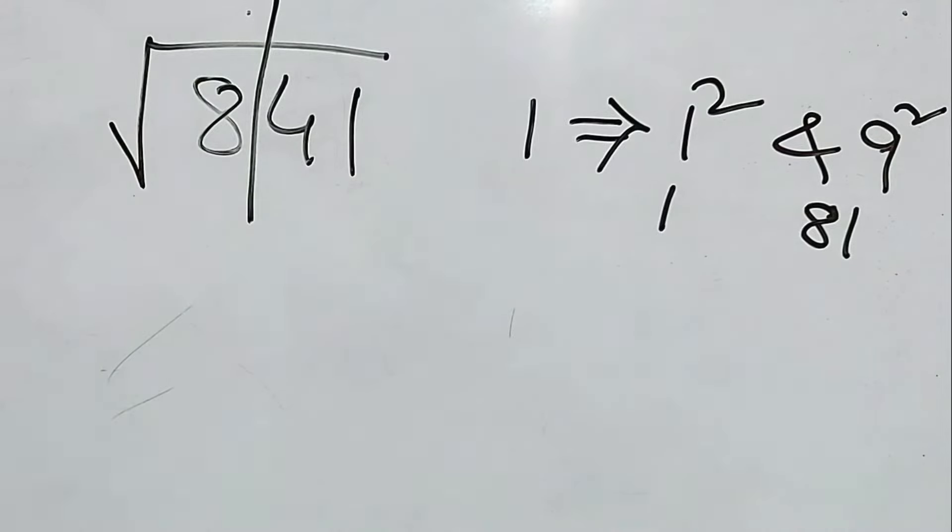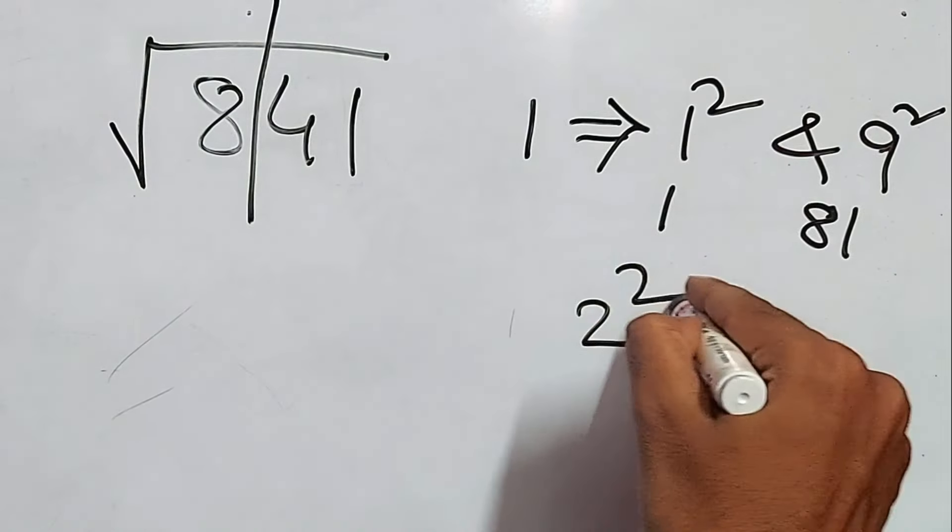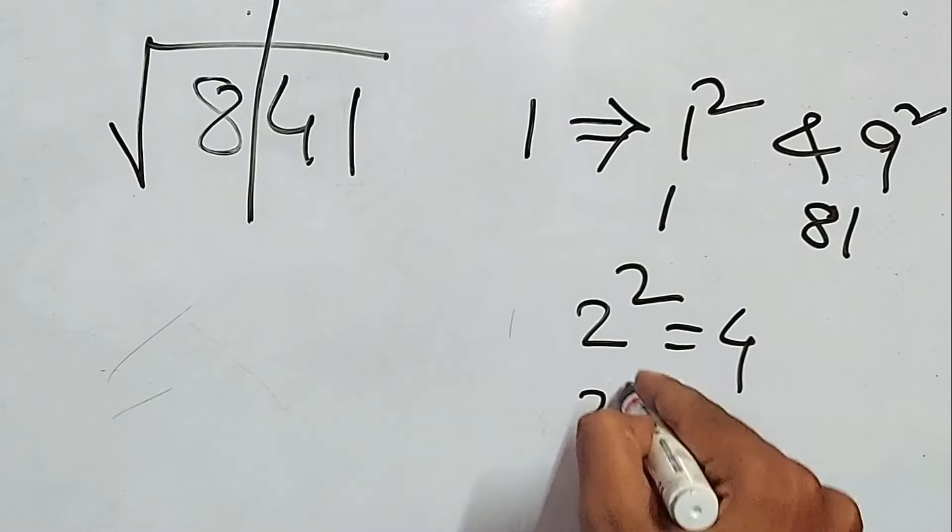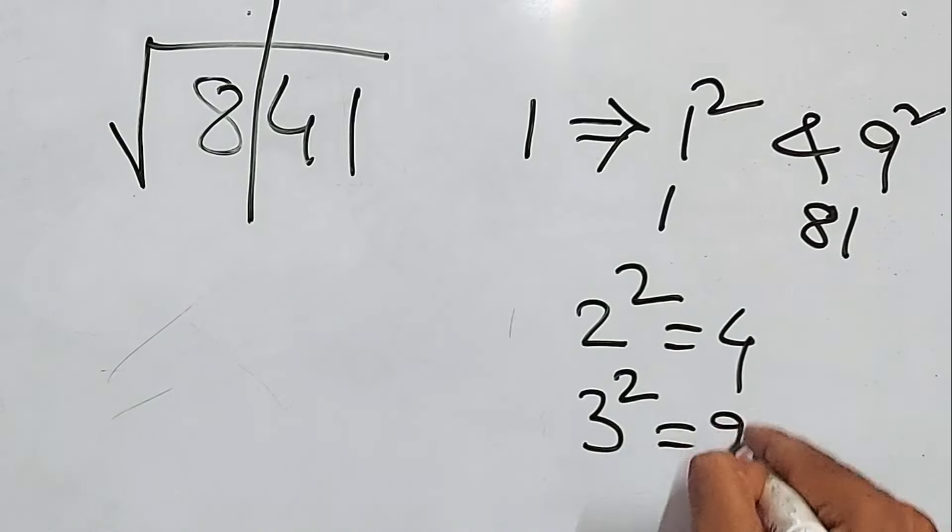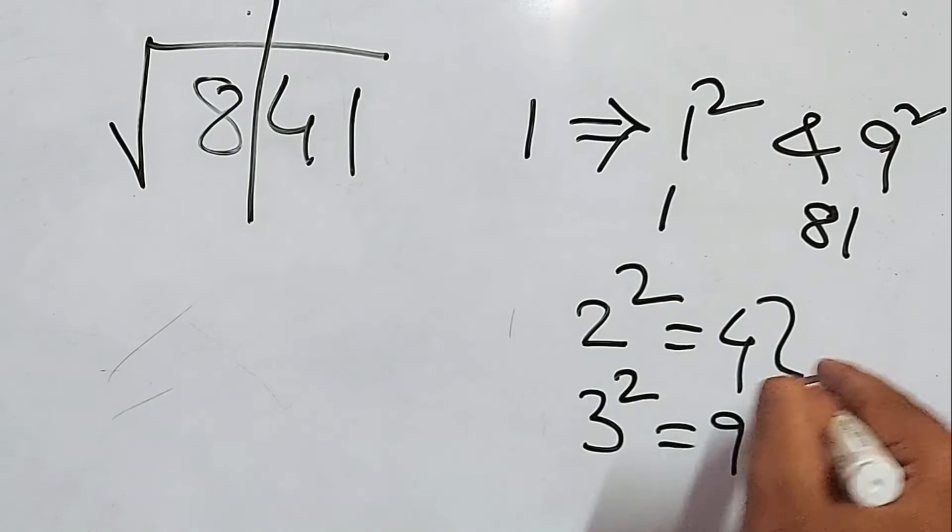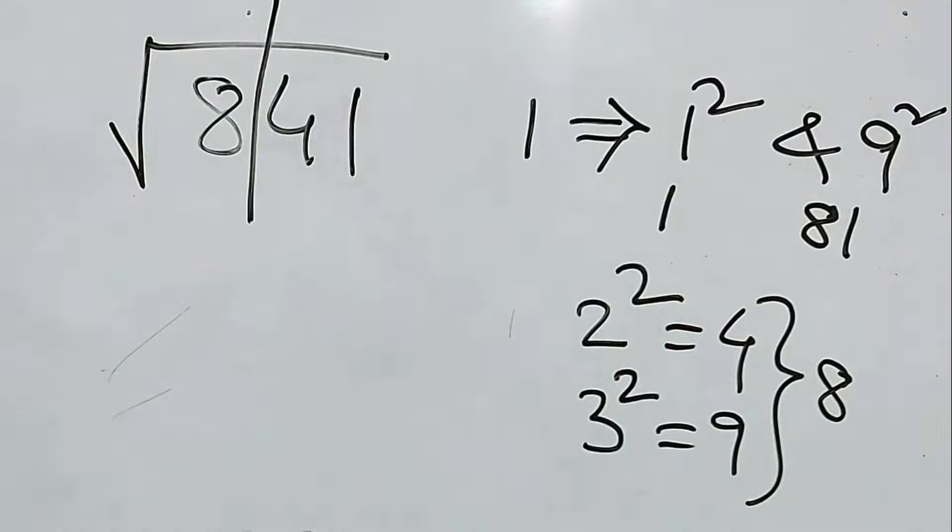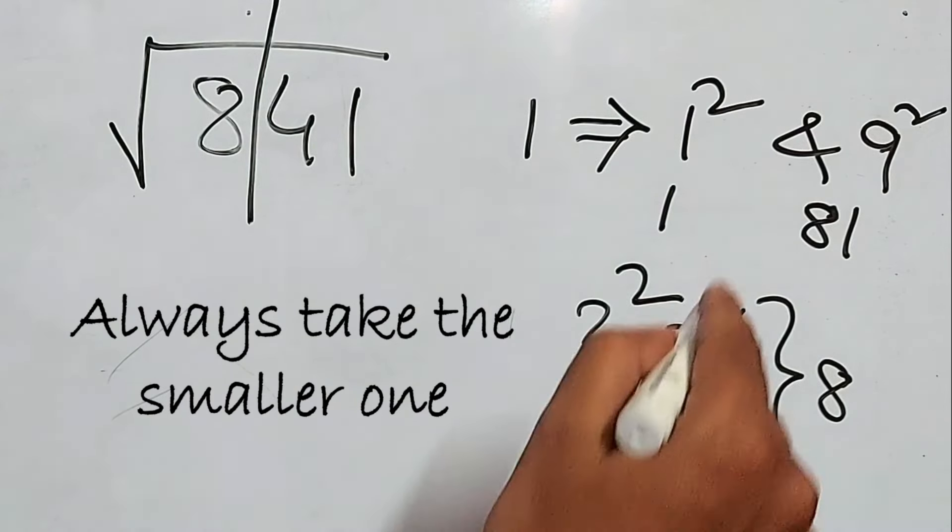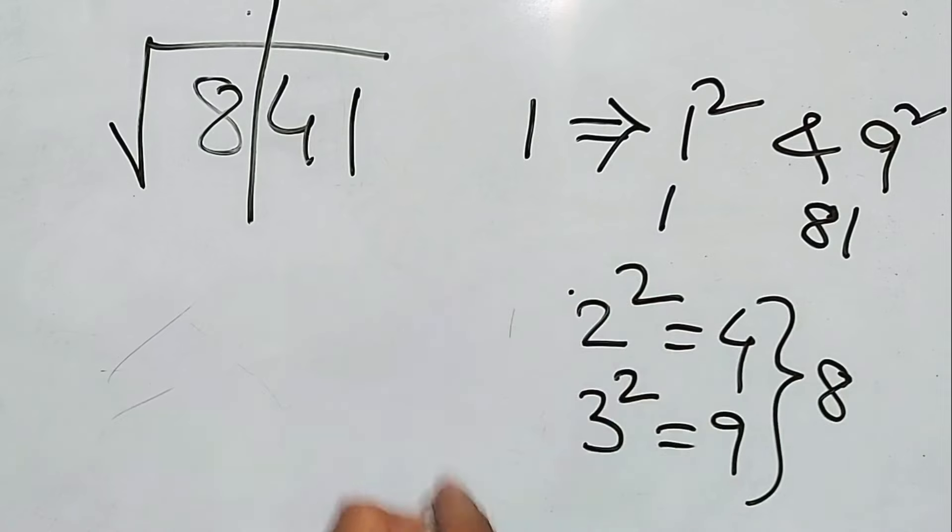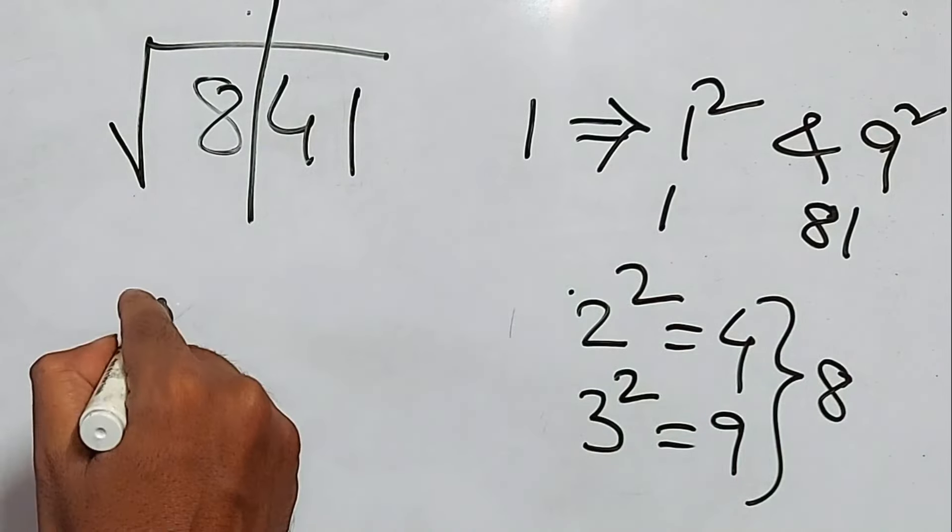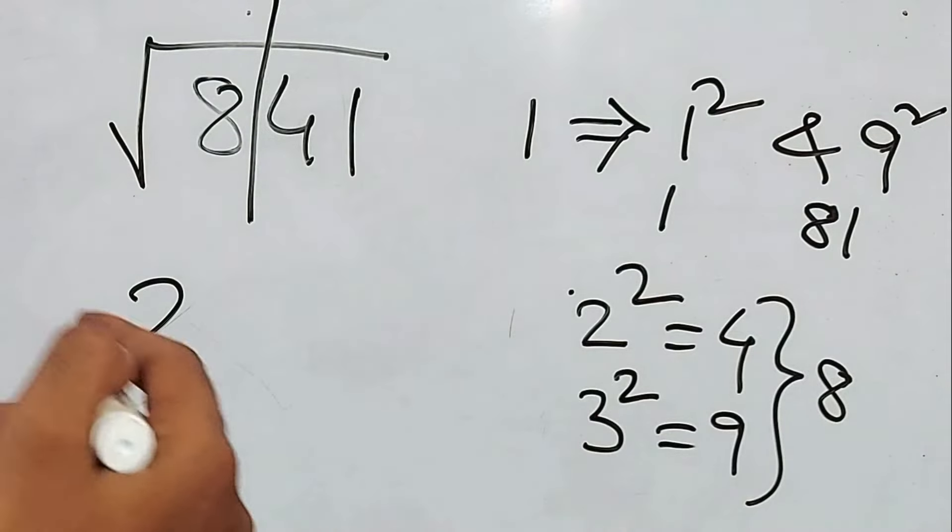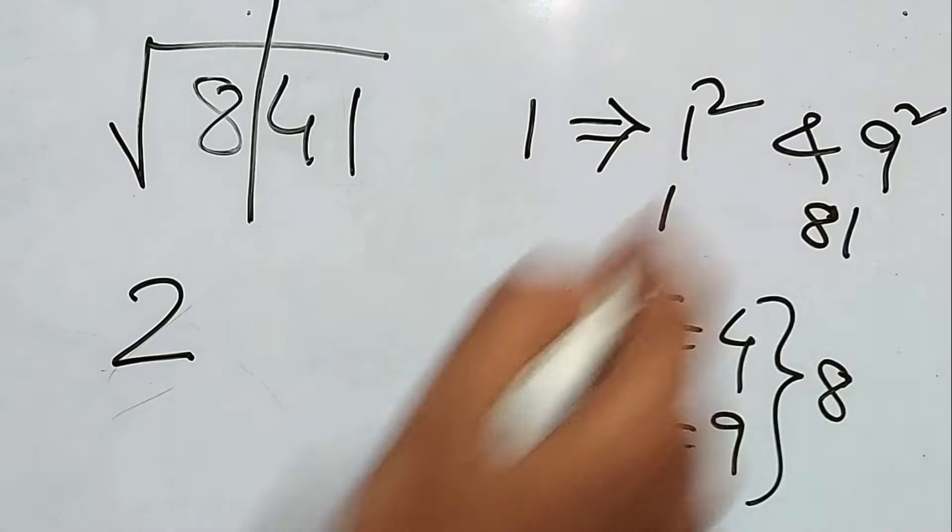Let us work with this 8. 2² is 4 and 3² is 9. So 8 has to be in between these two. And always take the smallest number, that is 4. And the actual number will be 2, because that is the square root. So first digit has to be 2.